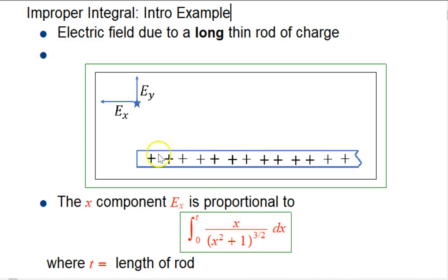Suppose you have a long thin rod that has some uniform positive charge on it, and this is supposed to indicate that it really goes on way out of the picture, it's quite long. You're a fixed distance, let's say distance one unit away from the end of the rod perpendicularly, and there's going to be an electric field pointing up and to the left, pointing away from all those positive charges.